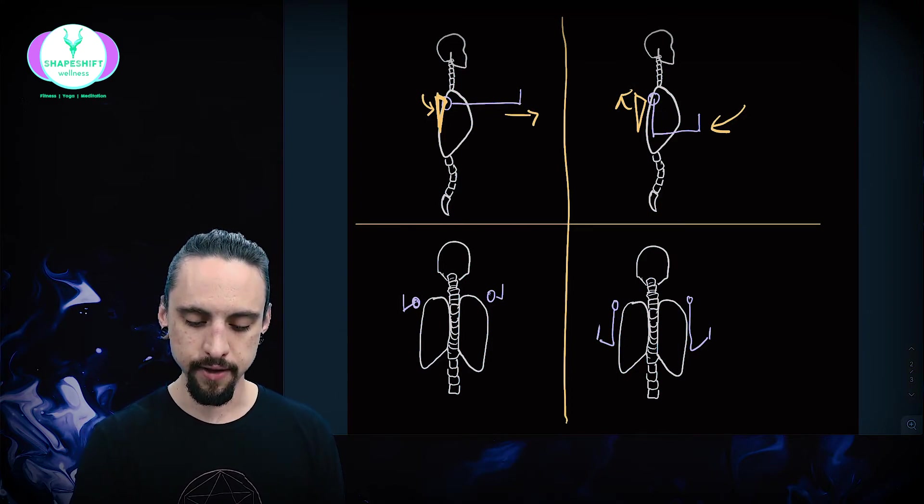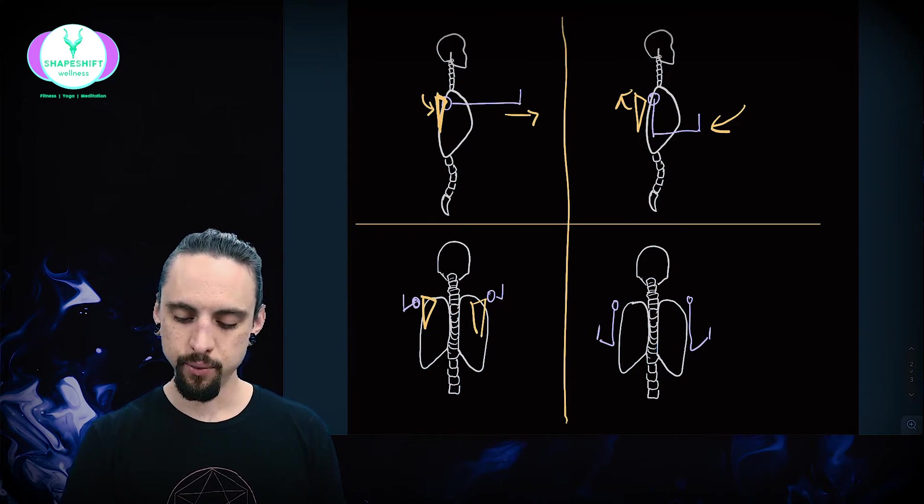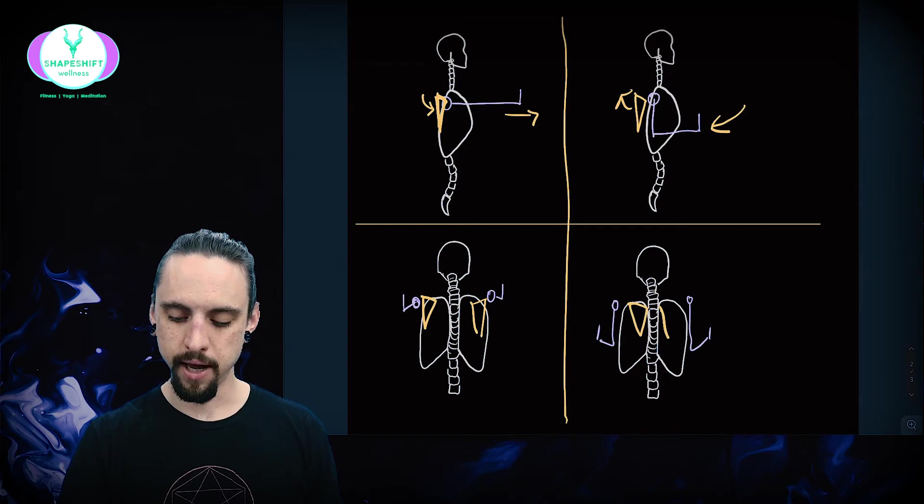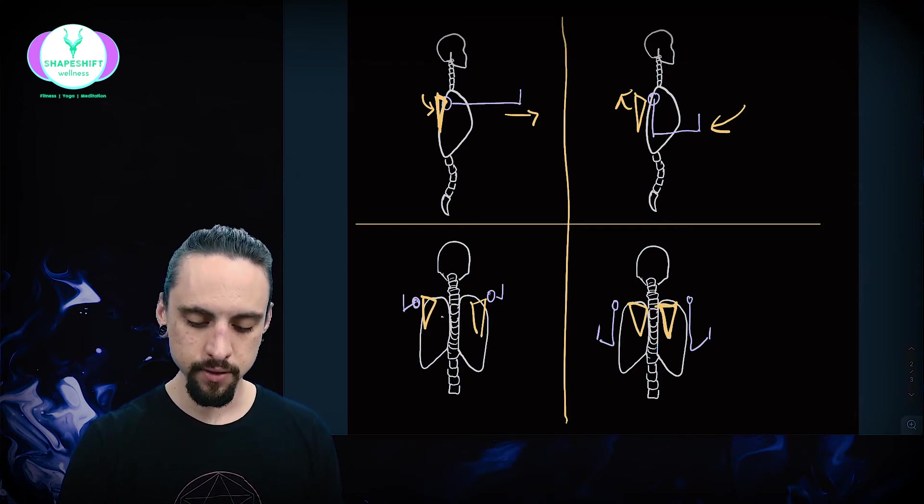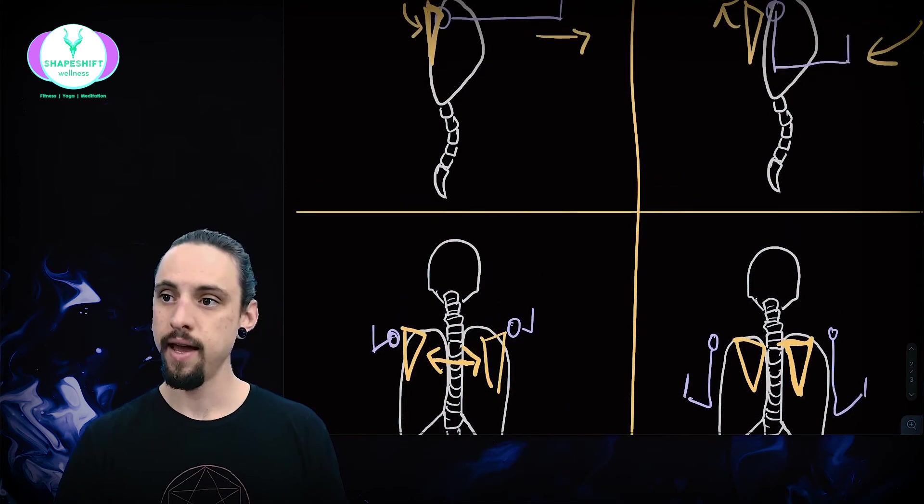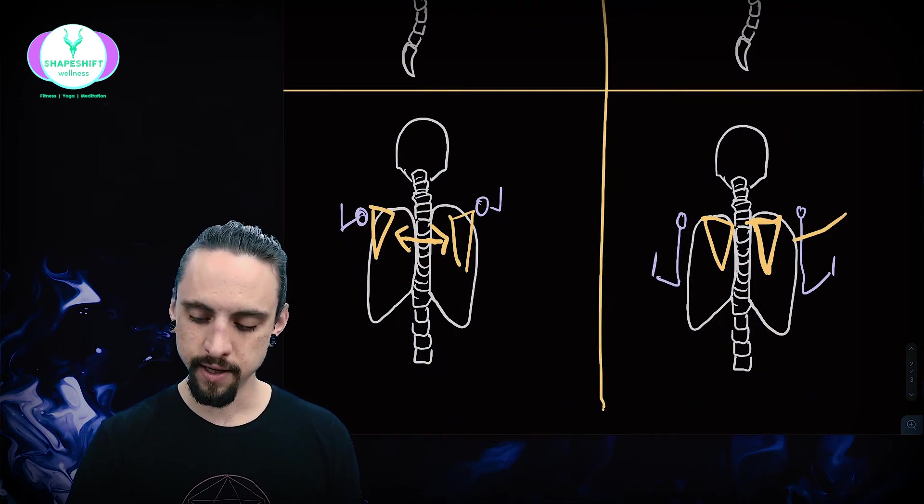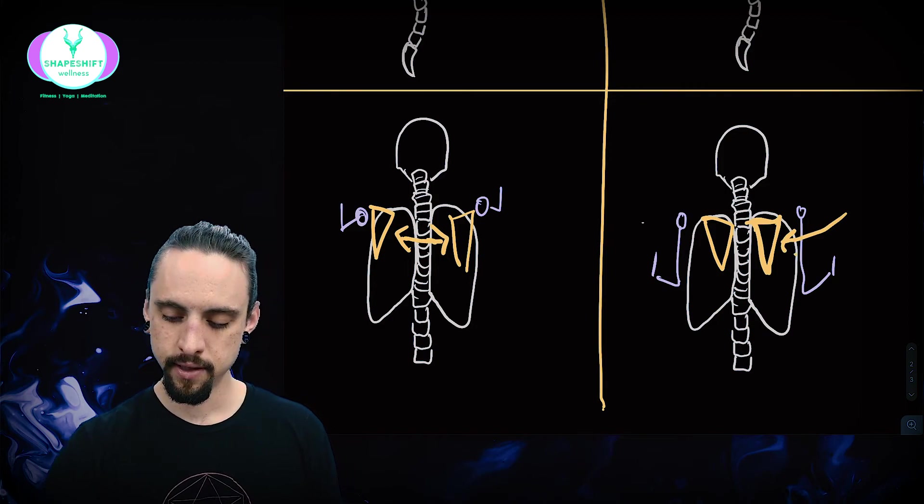From the top down view, what it's going to look like is that the shoulder blades will be more out here, versus when we lower down, they should actually pull closer to the spine. Here we have the shoulder blades moving out, and when we lower down, we have the shoulder blades moving in.